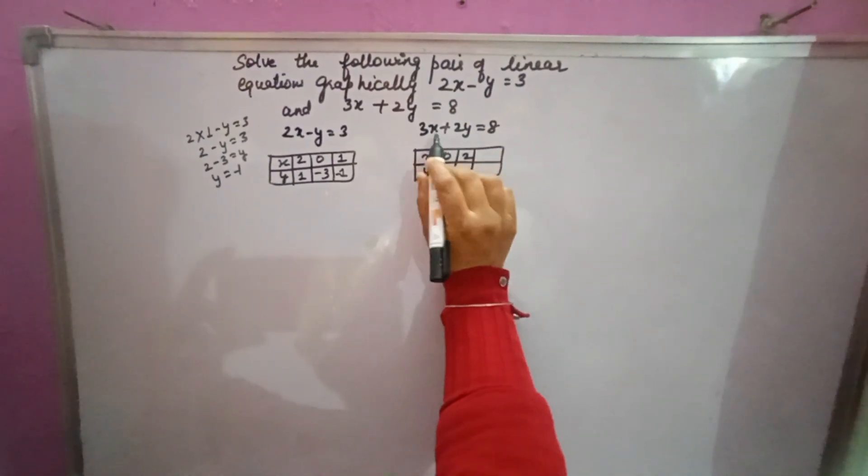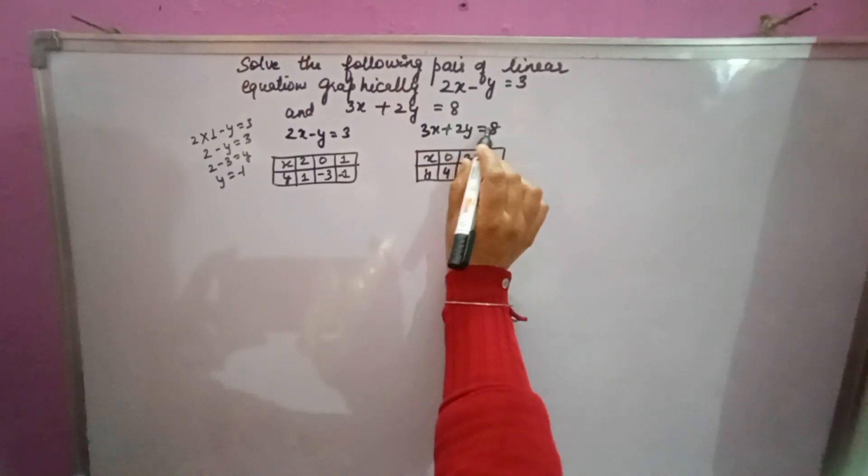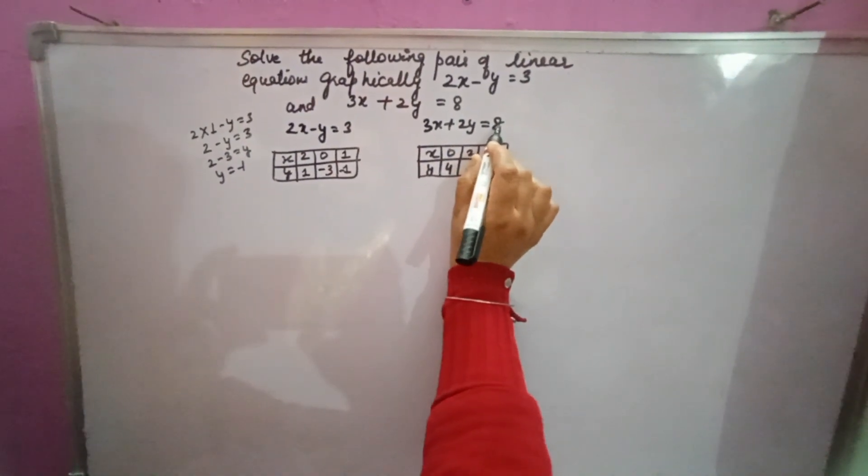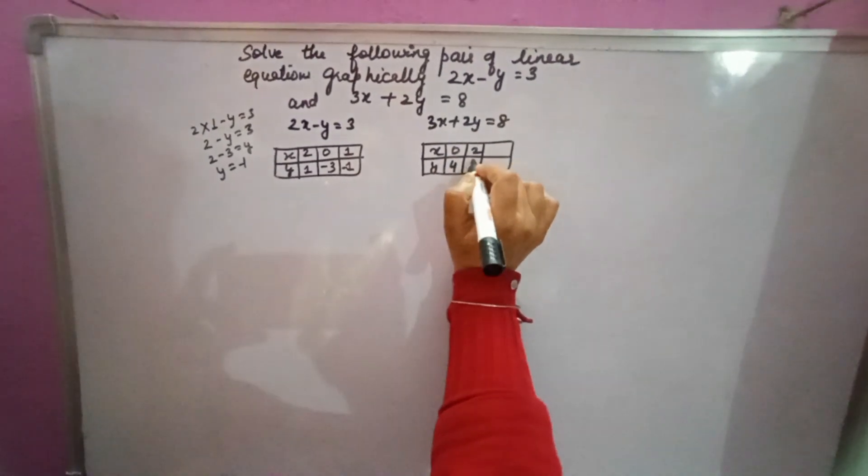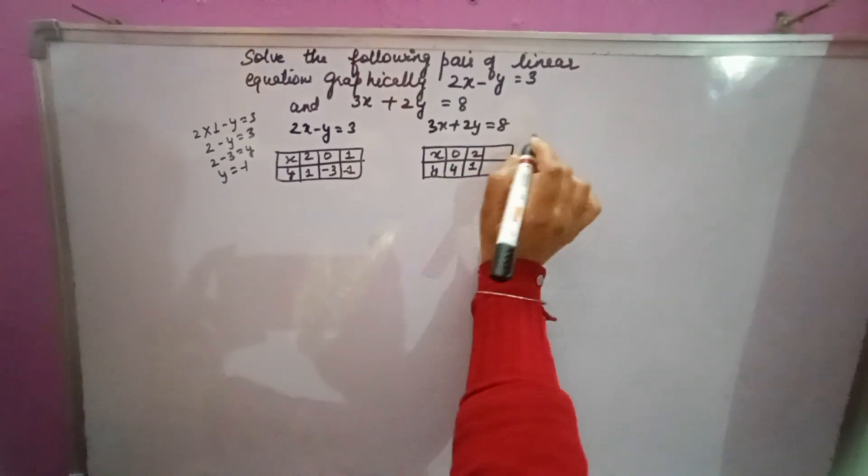If x you are taking 2, 3 times 2 is 6. 6 will go to that side. It will become minus 6. 8 minus 6 is 2. 2y equals 2. y will come 2 over 2, that is 1.